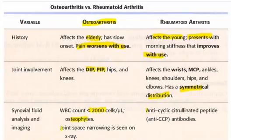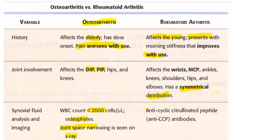On X-ray, osteoarthritis shows osteophytes, subchondral cysts, and joint space narrowing. In rheumatoid arthritis, anti-cyclic citrullinated peptide (anti-CCP) antibodies and rheumatoid factor are positive. Seronegative arthritis includes: ankylosing spondylitis (HLA-B27 positive), reactive arthritis, psoriatic arthritis, and enteropathic arthritis, which is associated with HLA-B27 and inflammatory bowel disease.